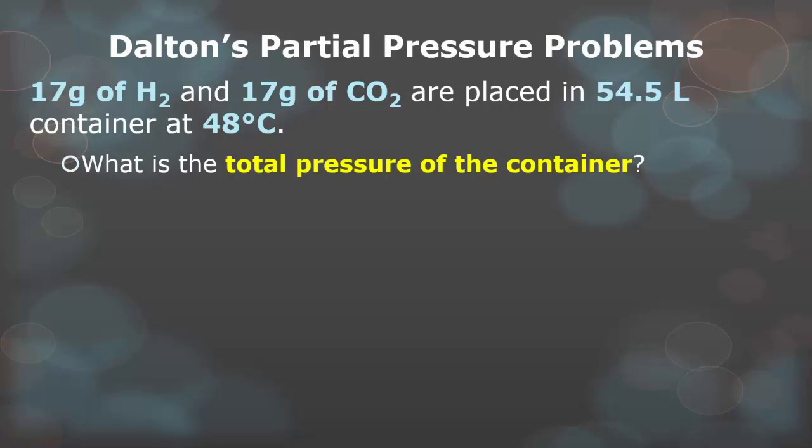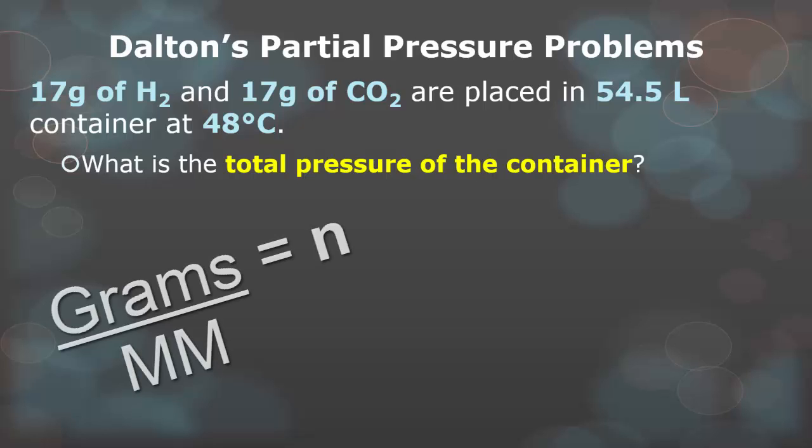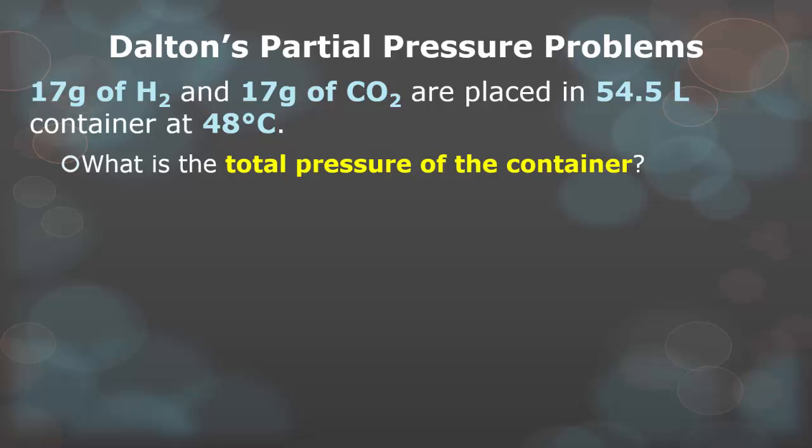So here's another example. 17 grams of hydrogen and 17 grams of carbon dioxide are placed in 54.5 liter container at 48 degrees Celsius. What is the total pressure of the container? Notice that we have grams in this case. We also have liters. We also have degrees Celsius. What do you think we need to do first? The first thing I would do is I would convert the masses of the hydrogen into moles. If one mole is 2 grams, then how many moles is 17 grams? And I do the exact same thing for the carbon dioxide. We don't know what the pressure is exactly. So therefore, what formula would we use to find pressure? We know how many moles we have in total. We know our volume and we have a Celsius degree. I believe we have to use the PV is equal to NRT formula. But notice that you first need the total number of moles, so the hydrogen and the carbon dioxide, to find the total pressure from the ideal gas law.